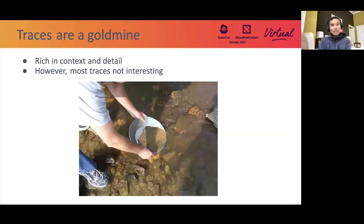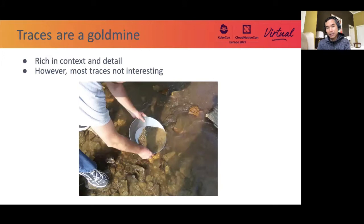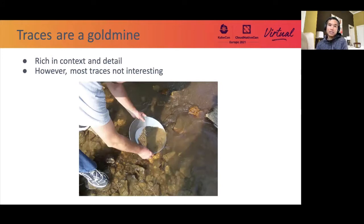Traces are a goldmine of observability data — rich in context and detail — but actually the majority of those traces are not that interesting. Once in a while you do find some nuggets of interesting traces, like those with errors or slow requests, but then the question is: what's the best way to find these little nuggets of gold amongst our mountain of spans?